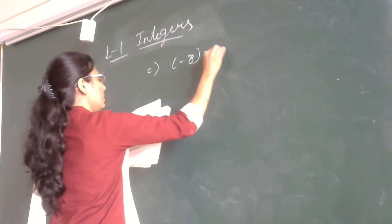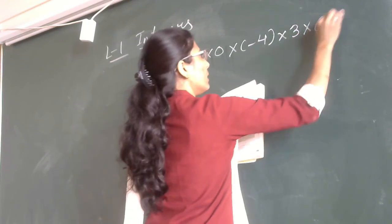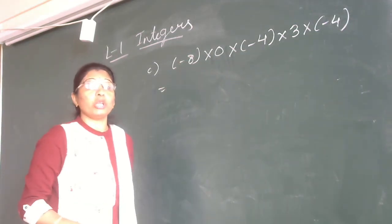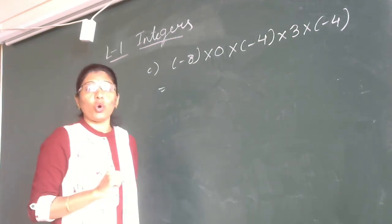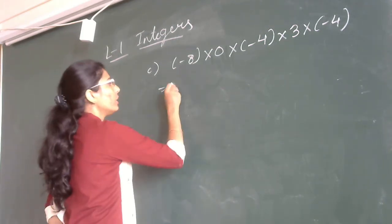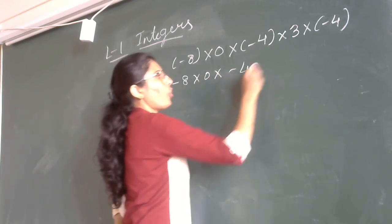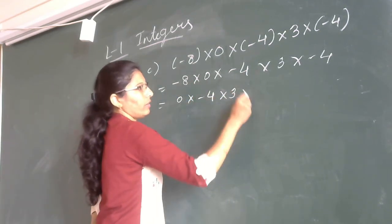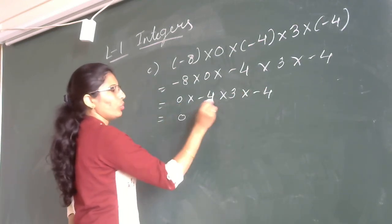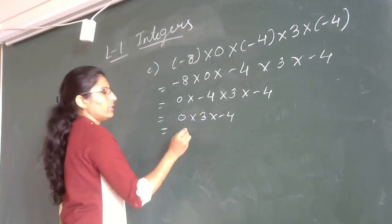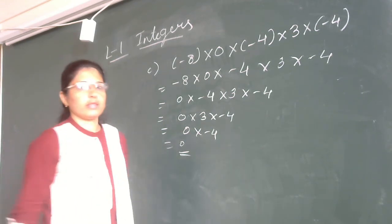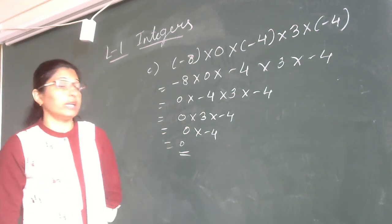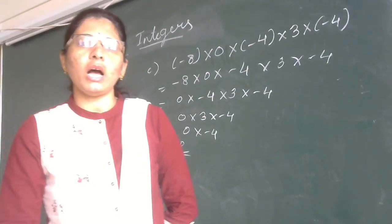Now, for the example minus 8 into 0 into minus 4 into 3, we can use the zero property: any integer multiplied with 0 gives 0. Here minus 8 into 0 is 0, and then 0 multiplied by anything is still 0. So 0 into minus 4 is 0, and 0 into 3 is 0. The answer is 0. After this, we will see division of integers in our next class. Thank you.